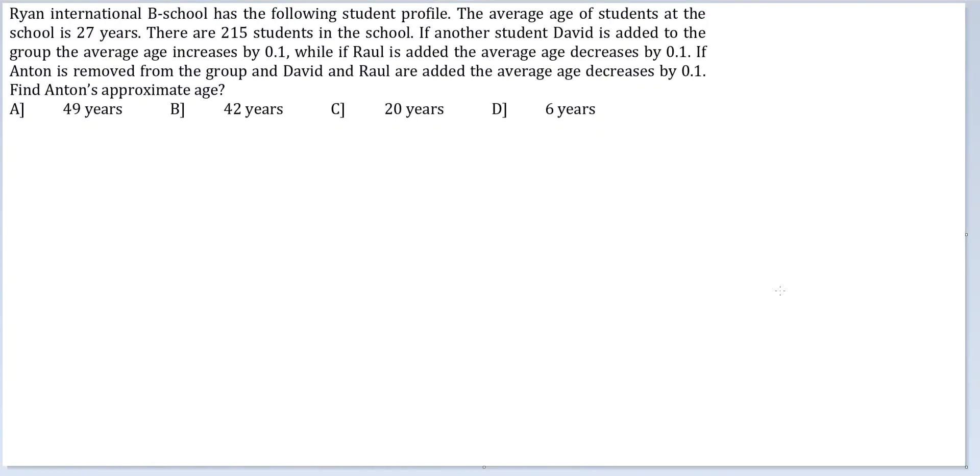Let's look at this question. Ryan International School has the following student profile. The average age of students at the school is 27 years. So they have some old students there. There are 215 students in the school.